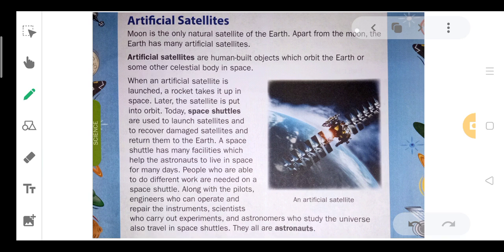The moon is only the natural satellite of the earth. Apart from the moon, the earth has many artificial satellites. Artificial satellites are human-built objects which orbit the earth or some other celestial bodies in space.